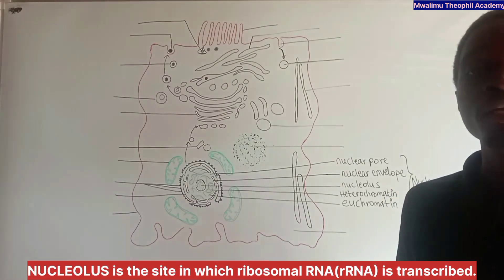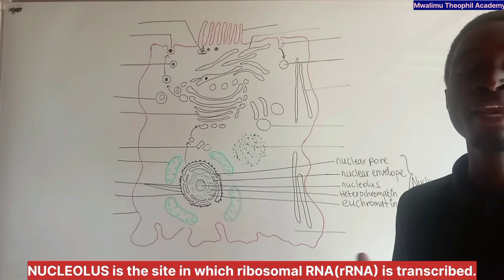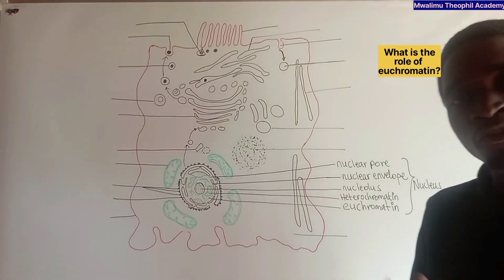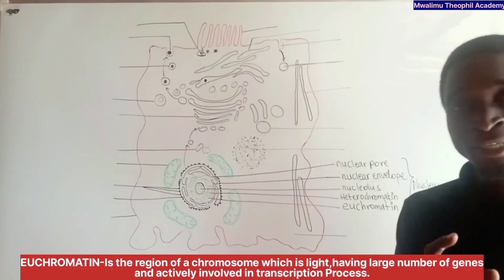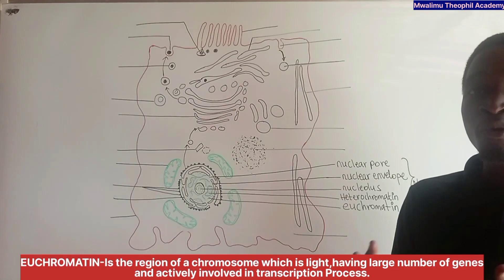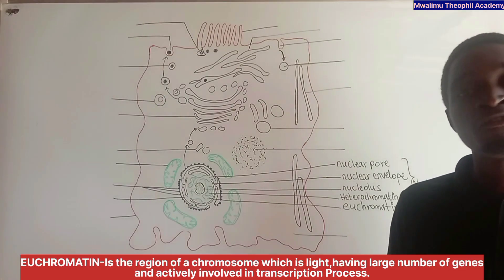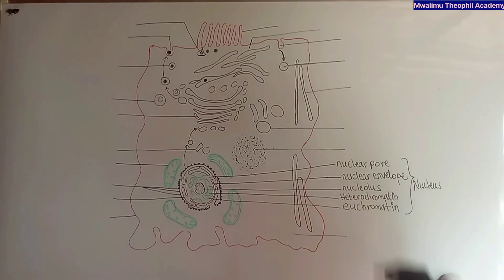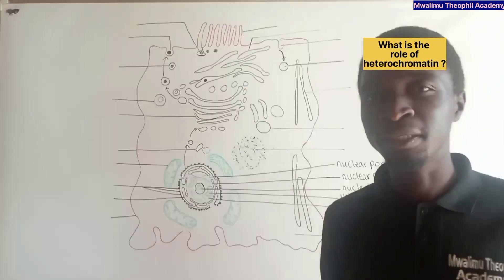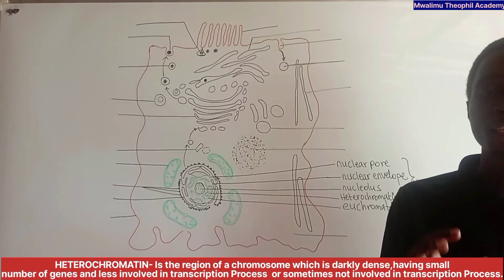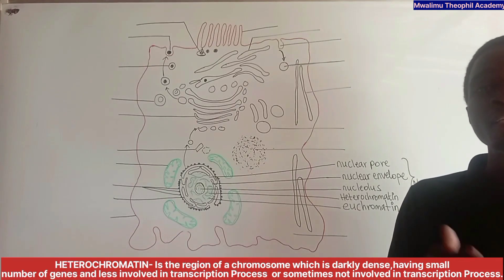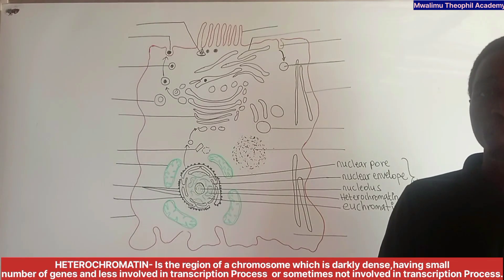The nucleolus is the site at which ribosomal RNA is transcribed. Another part of the nucleus is euchromatin — the region of a chromosome which is light and is actively involved in the transcription process. Heterochromatin is the region of a chromosome which is dense and is less involved, or sometimes not involved, in the transcription process.